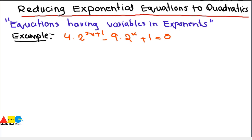We can solve such equations by using a substitution method to reduce this exponential equation into quadratic form. We can rewrite the equation as 4·2^(2x)·2^1 − 9·2^(x+1) = 0, splitting 2^(2x+1) into 2^(2x)·2^1 using the rule of exponents: when the base is common, the exponents are added.